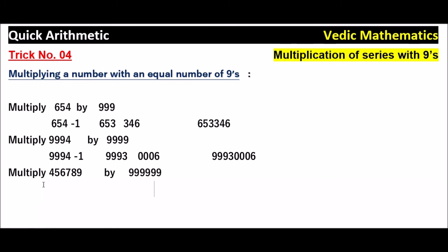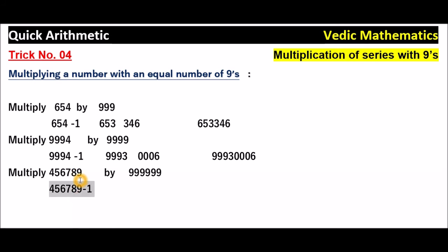Now coming to this example: multiply 456789 by 999999. What is the first step? Subtract 1 from the given number. 456789 minus 1 is equal to 456788.